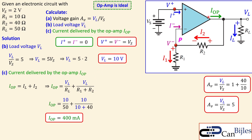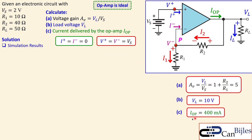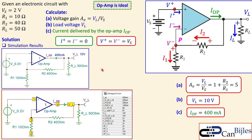To summarize the results: the voltage gain is +5, the load voltage is 10 volts, and the current delivered by the op-amp is 400 milliamps. Let's verify these in the simulation. This is the circuit drawn in the simulator — R1 = 10 ohms, R2 = 40 ohms, RL = 50 ohms. The current arrow confirms 400 mA and the node shows exactly 10 volts.